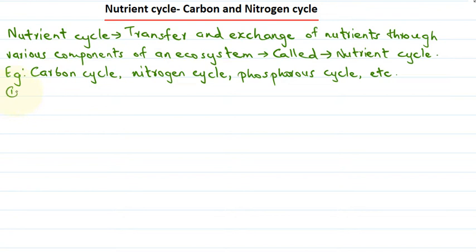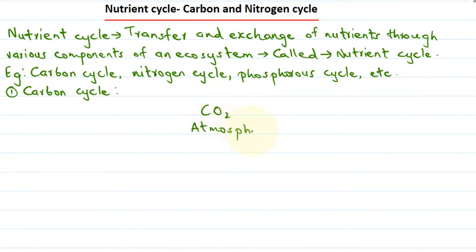So first, we will begin with the carbon cycle. This carbon is the main component of all living organisms. It exists as part of the carbohydrate. Do you know how carbon exists in the atmosphere? In the atmosphere, carbon exists in the form of carbon dioxide, which is the form of carbon present in the atmosphere.